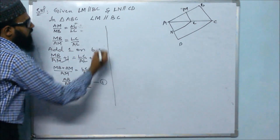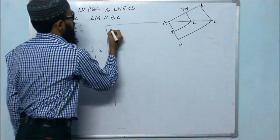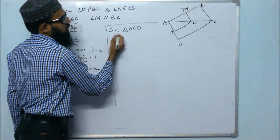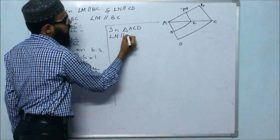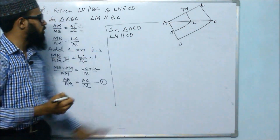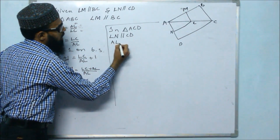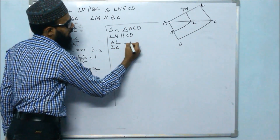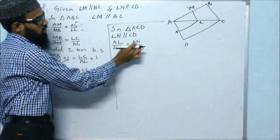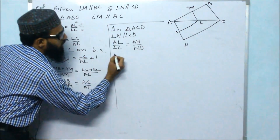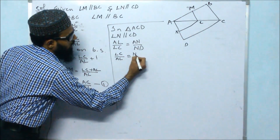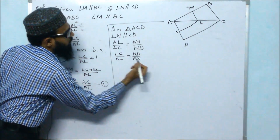Now we consider the next triangle, that is ACD. In triangle ACD, LN is parallel to CD. This line divides the other two sides in the same ratio, so we get Al/Lc = An/Nd. We will do the reciprocal of this, so Lc/Al = Nd/An.